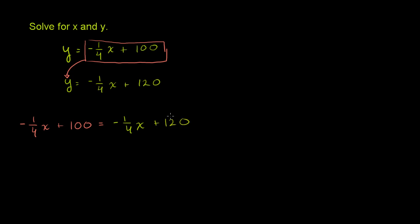Now the first thing we might want to do is maybe get all of our x terms onto the left or the right hand side of the equation, and if we wanted to get rid of these x terms from the right hand side, get them on the left hand side, the best thing to do is to add 1/4 x to both sides of this equation.